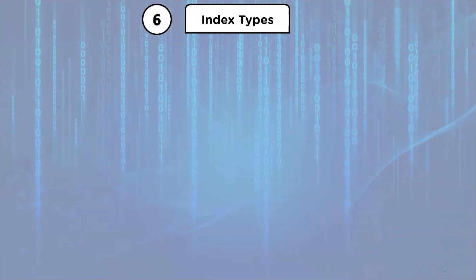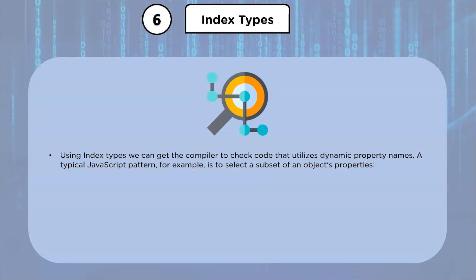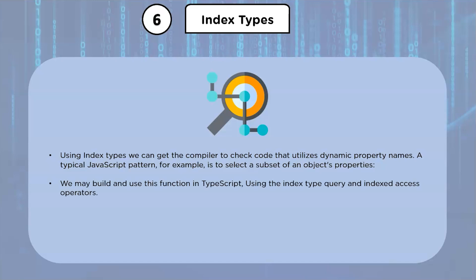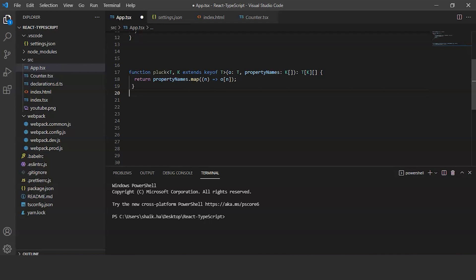Using index types, we can get the compiler to check code that utilizes dynamic property names. A typical JavaScript pattern is to select a subset of an object's properties. We can build and use this function in TypeScript using the index type query and index access operators. Let's jump into Visual Studio Code and understand index types better.